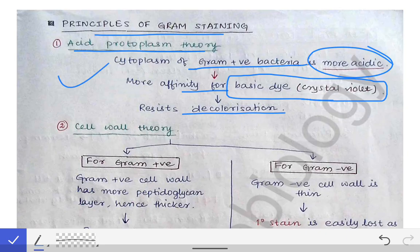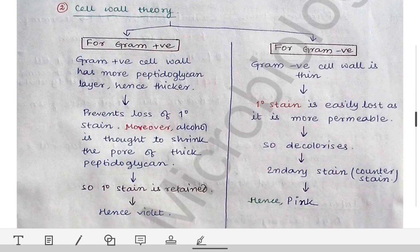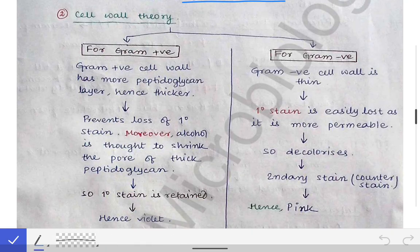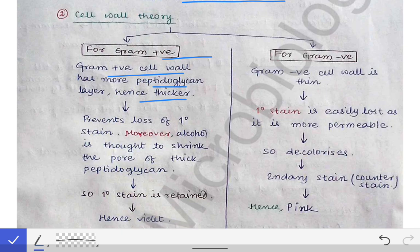This was the primitive acid protoplasm theory. Next comes the cell wall theory, which is somewhat accepted in recent days. This theory states that the Gram-positive bacteria has a thick cell wall with more peptidoglycan, while the Gram-negative bacteria has less peptidoglycan and a thinner cell wall. The thick cell wall prevents loss of the dye-iodine complex from the cytoplasm.